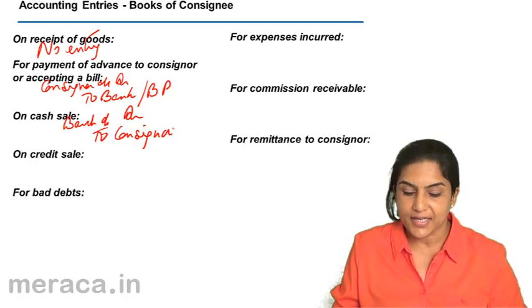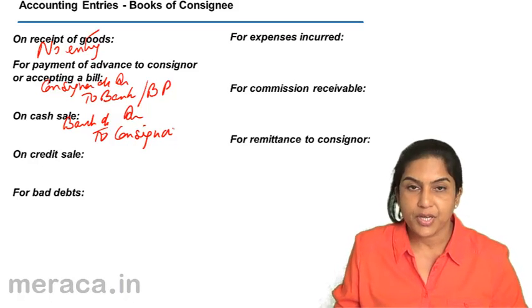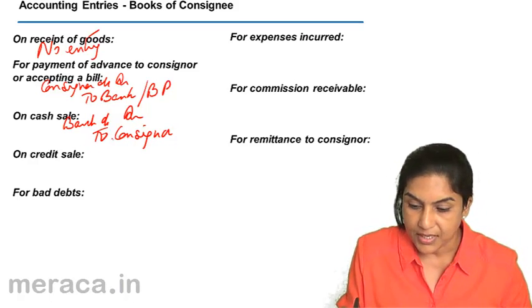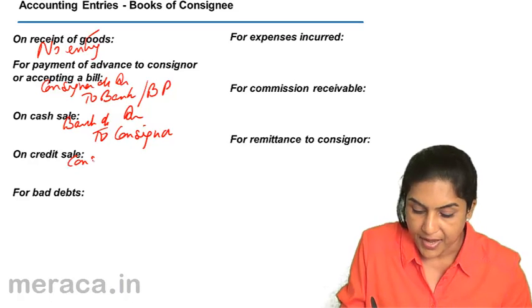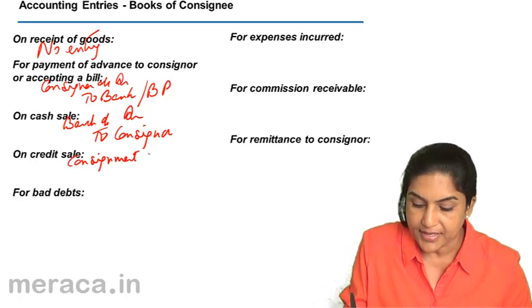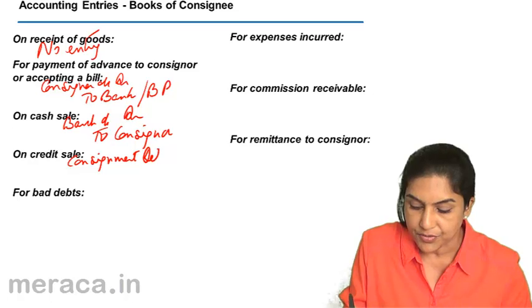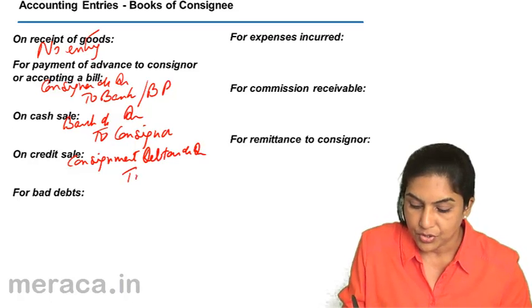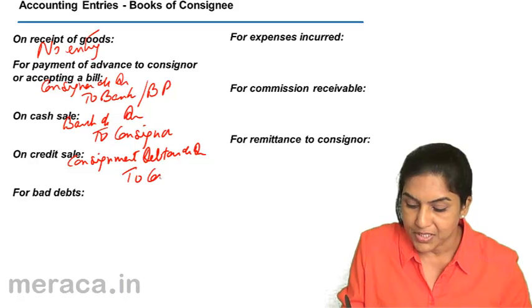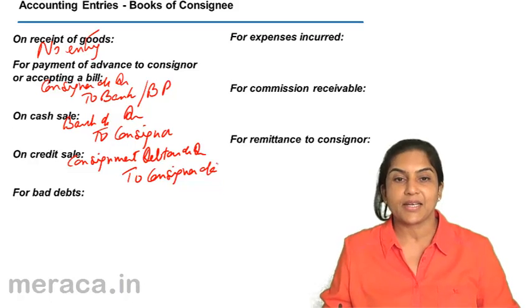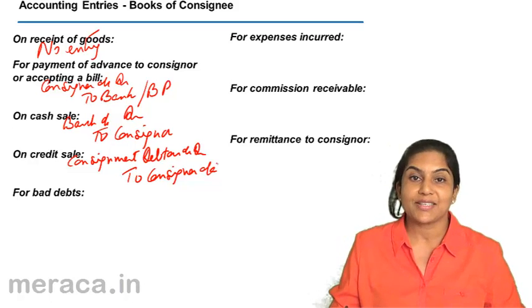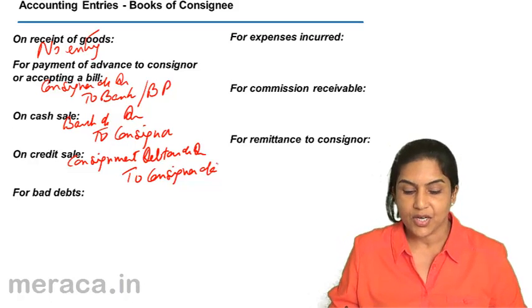If it's a credit sale, to keep control, the consignee may use something called a consignment debtor's account. The entry would be consignment debtor's account debit to consigner's account, because when the money is collected, it will go to the consigner.